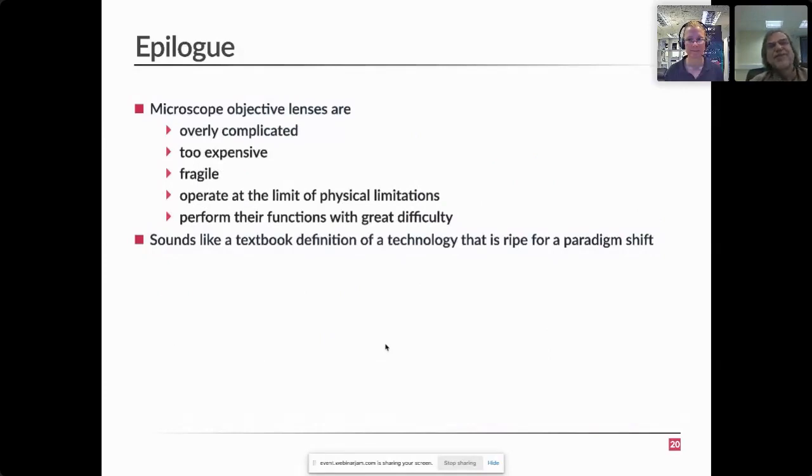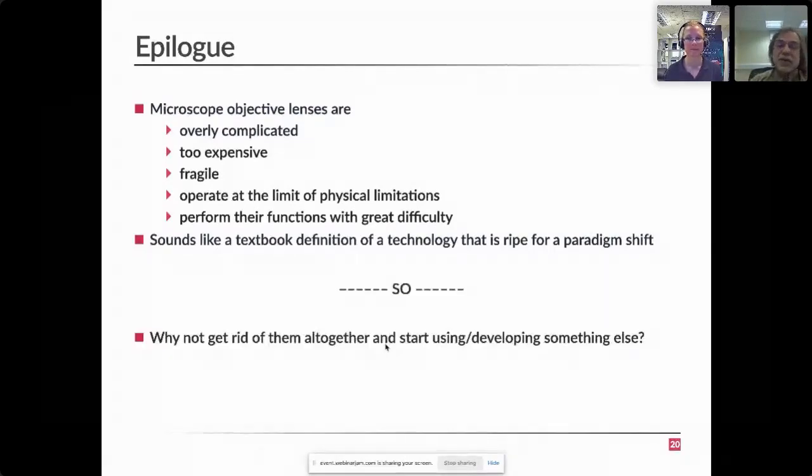But that brings me kind of to a slightly philosophical conclusion. So over the years it became clear to me that microscope objectives by now are at the point where by all definitions they represent technology that is right for a paradigm shift. They are overly complicated, they are expensive, they are fragile, they operate at the limit of physical limitations and perform their functions with great difficulty even at best of times. So is it the case that this technology should be, we should expect this technology to be superseded by something else, something completely different that works, that is simpler and works better?